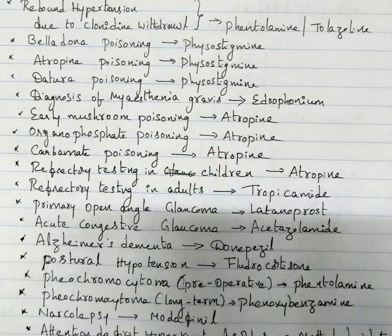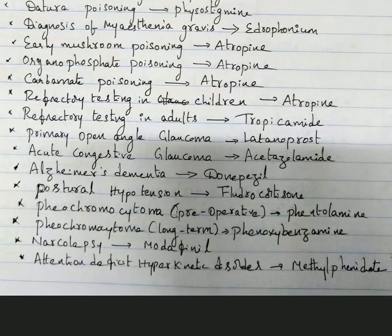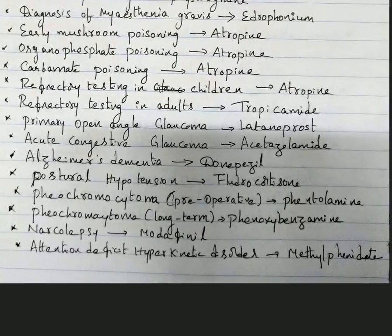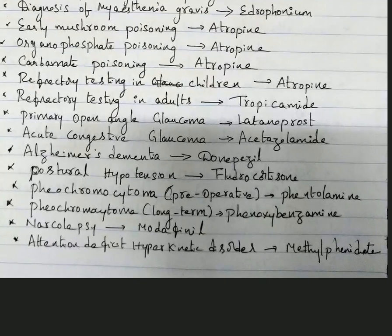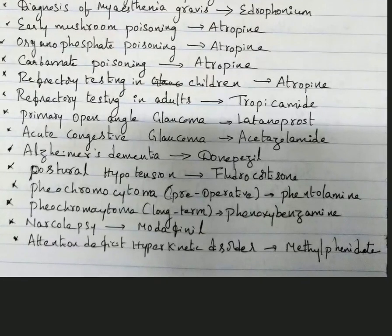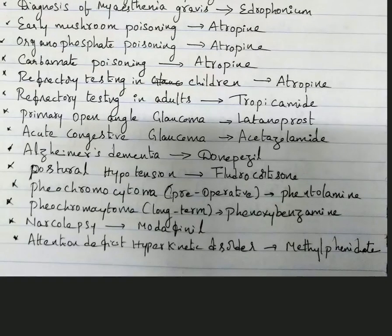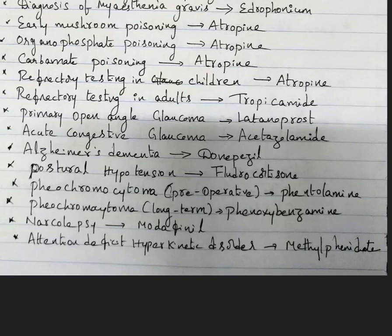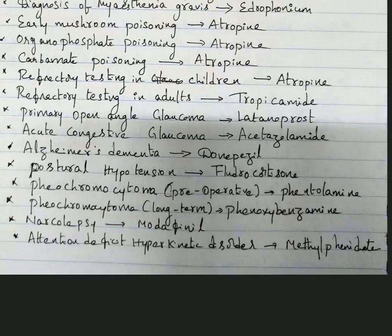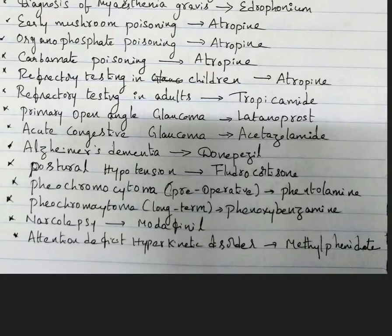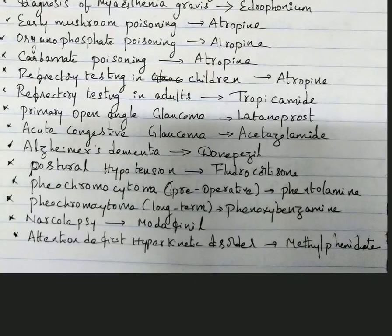Alzheimer's dementia: donepezil — we already studied this in CNS. Postural hypotension: drug of choice is fludrocortisone. For pheochromocytoma preoperative management, we give phentolamine. Phentolamine is also given in two other conditions: cheese reaction and clonidine withdrawal (rebound hypertension).